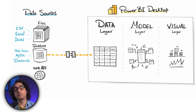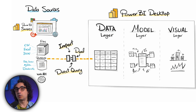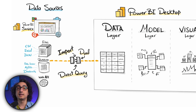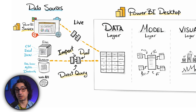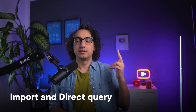Depending on the type of the source, we have a few options. If you are connecting to a completely new data source, you have import, direct query, and dual - three options. We also have a fourth special connection: when you are connecting Power BI to reuse something that already exists in the Power BI service, we use the live connection. We're going to focus on the two most important types: import and direct query.